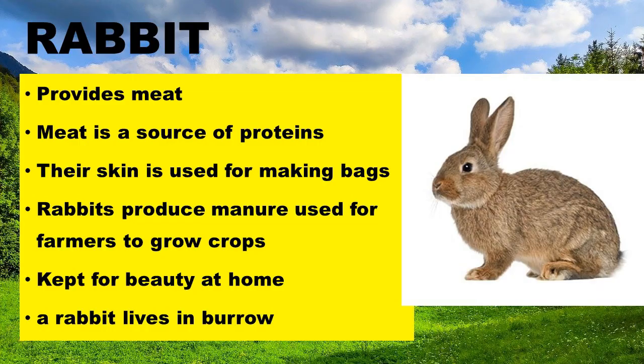The next animal is the rabbit. Rabbits provide meat, and the meat of a rabbit is a source of proteins. Their skin is used to make bags. Rabbits also produce manure used by farmers to grow crops, and they are kept for beauty at home. A rabbit lives in a burrow.